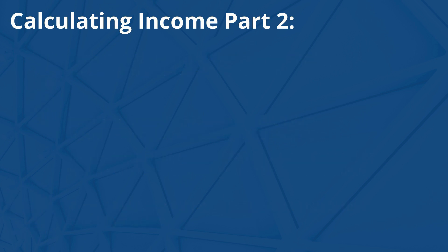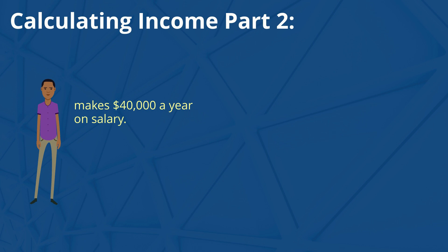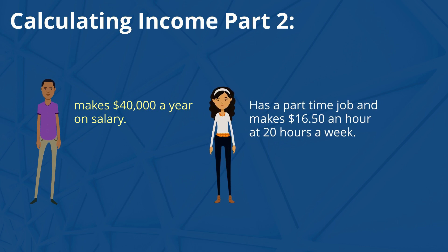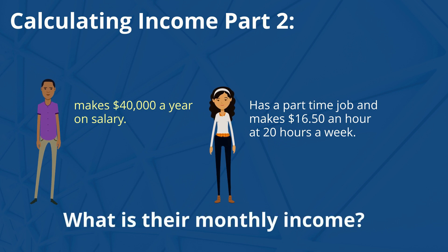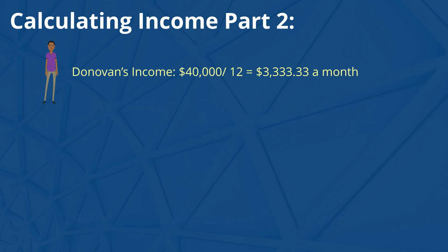Let's take a look at another example. Donovan and Kim are going to purchase their new home together. Donovan makes $40,000 a year on salary. Kim has a part-time job and makes $16.50 an hour at 20 hours a week. What is their monthly income? Donovan's income: $40,000 divided by 12 is equal to $3,333.33 a month.